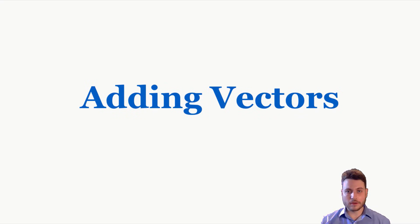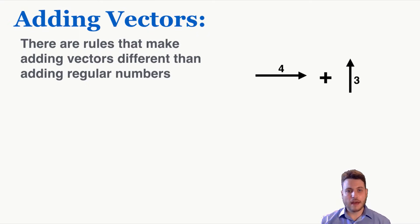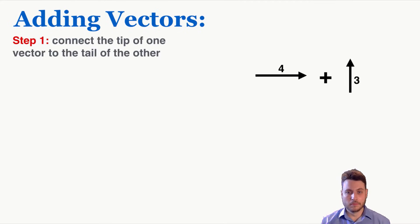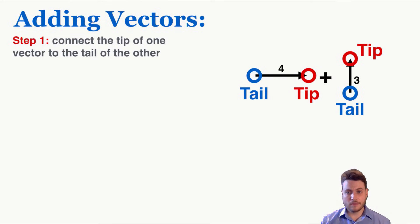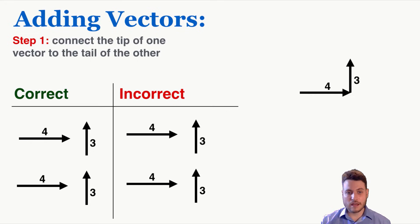Now we're in the part of the video about adding vectors. There are rules that make adding vectors different than adding regular numbers, because vectors also include direction, so the directions of the vectors you're adding are going to matter for their sum. The first step to adding vectors is to connect the tip of one vector to the tail of the other. The tip is the point of the arrow and the tail is the opposite end — it doesn't matter which order we do this in.